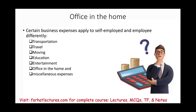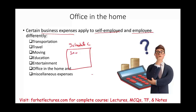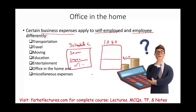Welcome to this session discussing certain business expenses that apply differently for self-employed and employees. If you are self-employed, you prepare a Schedule C, listing your income and expenses, resulting in either a net income or net loss. That net income or loss then goes to your Form 1040 as adjusted gross income. Any expenses you take are considered 'for' adjusted gross income.